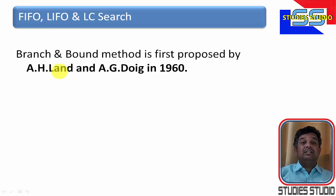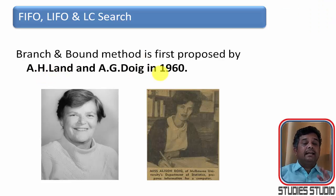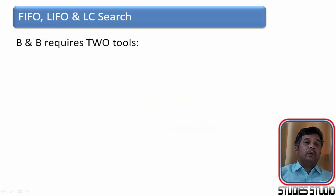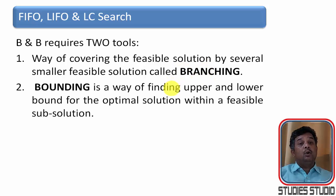The branch and bound method was first proposed by H.A. Lent and A.G. Deuch in 1960. To have branch and bound, there are two requirements. The first requirement is the way to cover the feasible solution by several smaller feasible solutions. We will say it as branching. And the second one is bounding. It is the way of finding the upper and lower bound for the optimal solution within the feasible solution.